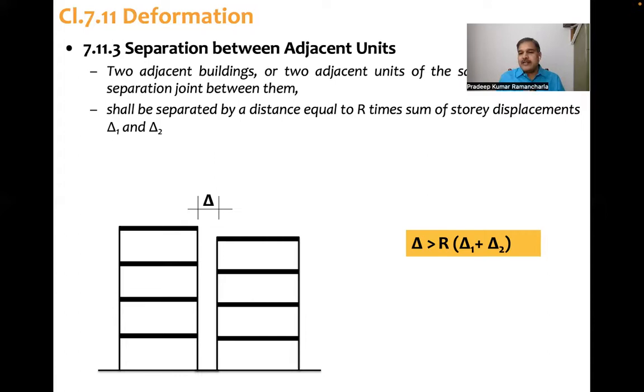That means it is the same building. If it is same building, then response reduction factor is same for both components of the building, so it should be delta 1 plus delta 2. Then if it is different buildings with different R values, so delta should be greater than R1 delta 1 plus R2 delta 2. So this is actually a conservative estimate.